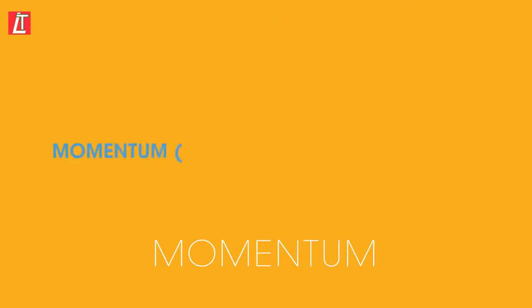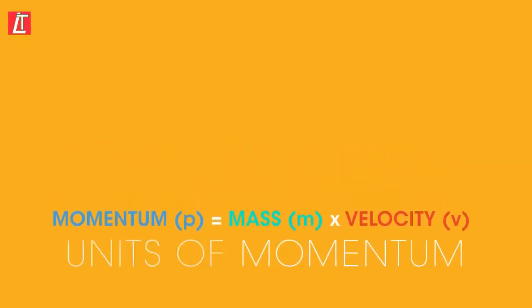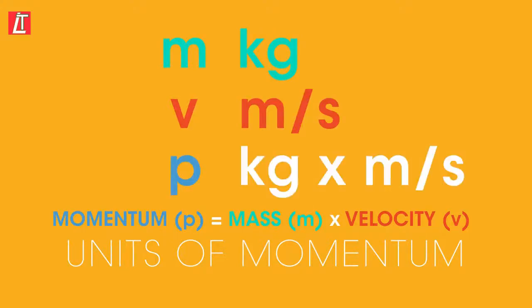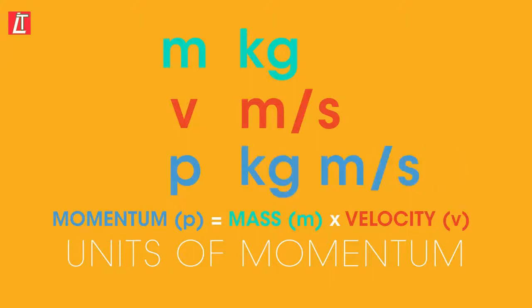Momentum P equals mass m times velocity v. So what are the units of momentum? Mass is measured in kilograms and velocity in meters per second, so momentum equals kilograms times meters per second, which equals kilogram meters per second.